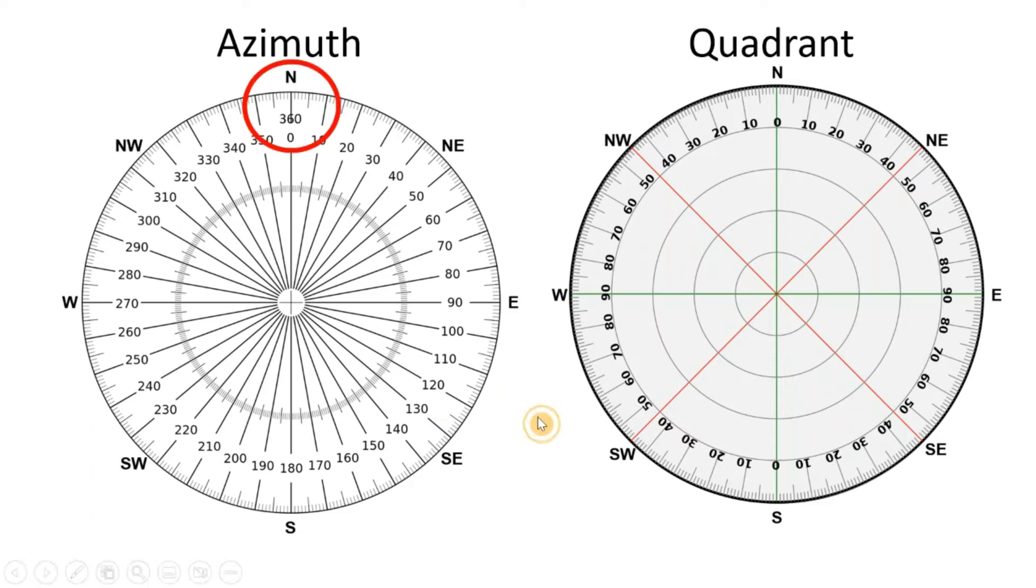Basically, azimuth uses 360 degrees, starting from north going clockwise direction. Quadrants start from either north or south, depending on which direction will give the smallest reading. All quadrant readings will be less than 90 degrees.